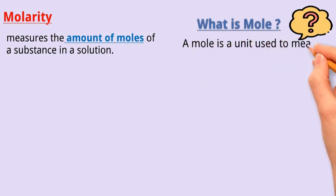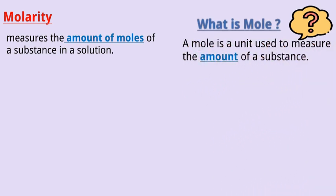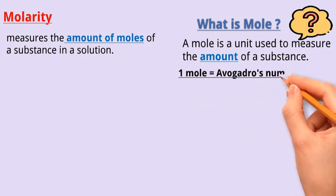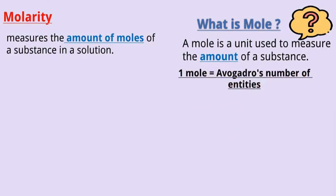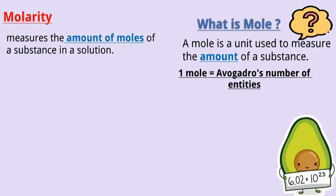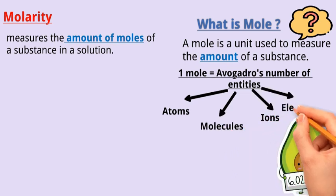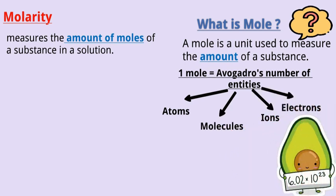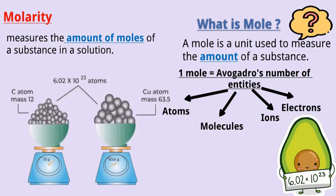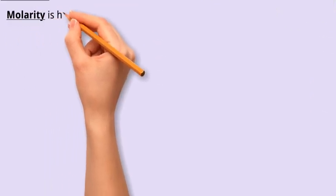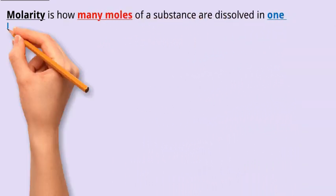A mole is a unit used to measure the amount of a substance. One mole of any substance contains Avogadro's number of entities which is approximately 6.02 times 10 to the 23rd power. These entities can be atoms, molecules, ions, electrons, or any other chemical entities. To put it simply, a mole is like a chemist's dozen. Just as a dozen represents 12 items, a mole represents a specific number of particles.